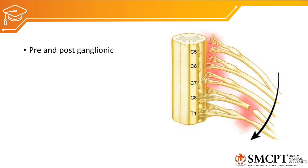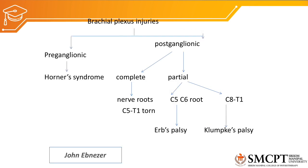Brachial plexus injury can be divided into preganglionic and postganglionic injury. Preganglionic injury means the injury is proximal to the dorsal root ganglion, whereas postganglionic means it is distal to the dorsal root ganglion. The most significant clinical feature of a preganglionic injury is Horner syndrome, where the sympathetic nervous system is involved, causing drooping of the eyelid, pupil constriction, and abnormal sweating.